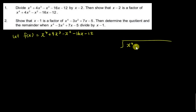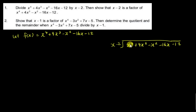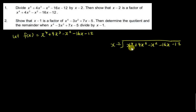So this is x to the power of 4 plus 4x cubed minus x squared minus 16x minus 12, divided by (x minus 2). When you do the long division, you always need to make sure you have every single power. What I mean is that if you have x to the power of 4, you must have x cubed, x squared, x, and the constant. If one of them is missing, you need to add a zero for it. Our objective is always to eliminate the first term. My first term is x to the power of 4, so I multiply x cubed, because x cubed times x gives x to the power of 4.